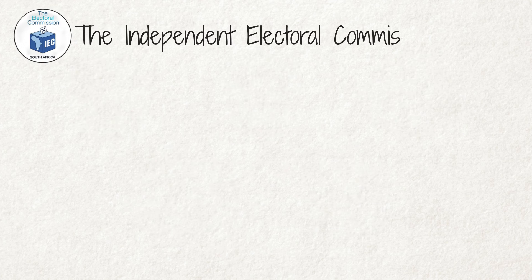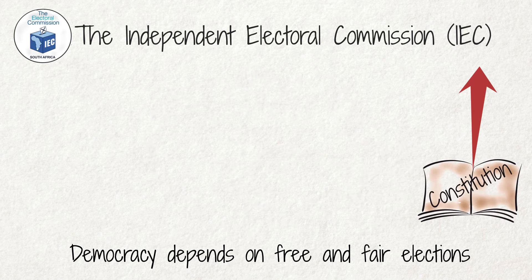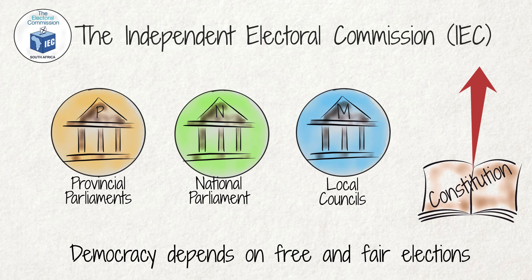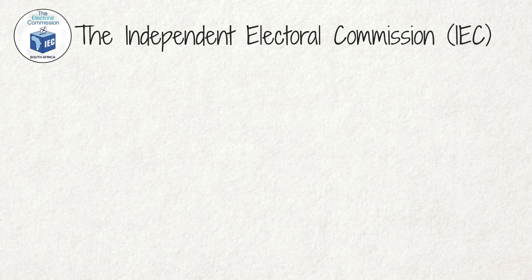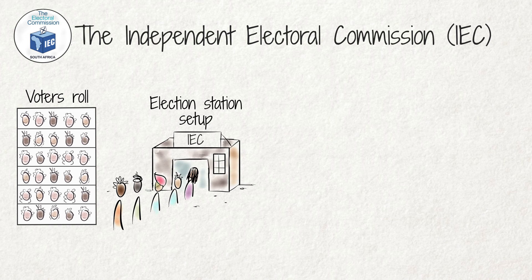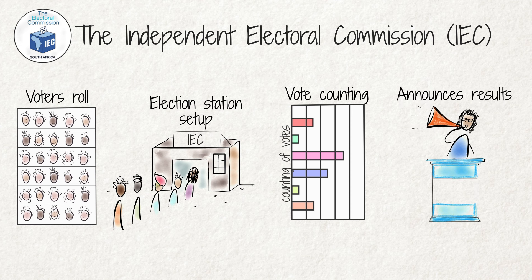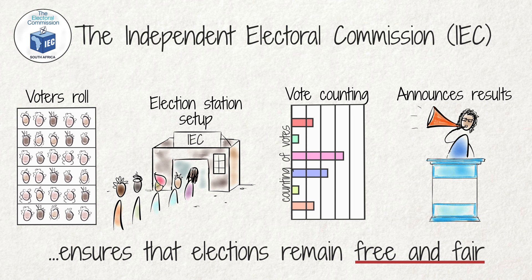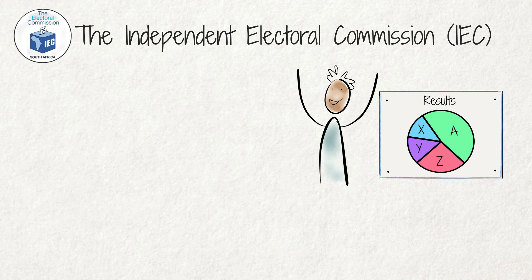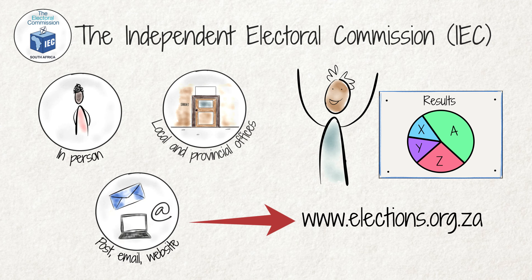The Independent Electoral Commission. The IEC does this by compiling and managing the voter's roll, which is a list of all citizens who are registered to vote. The IEC also manages the elections as such, including the election stations set up on election day. The IEC also counts the votes after the election and announces the results. This is how the IEC ensures that all elections remain free and fair and that voters can trust the outcome of the elections. You can approach one of their local or provincial offices either in person or via email. The different offices and contact details can be found on the IEC website.